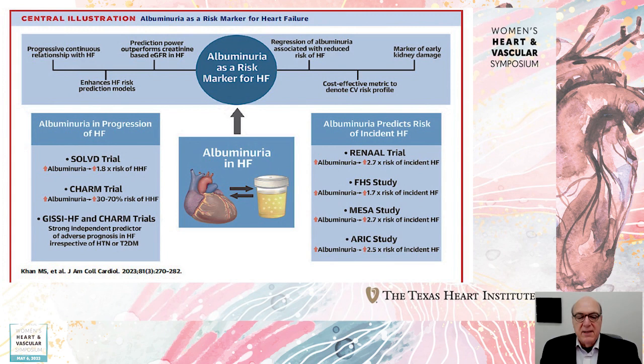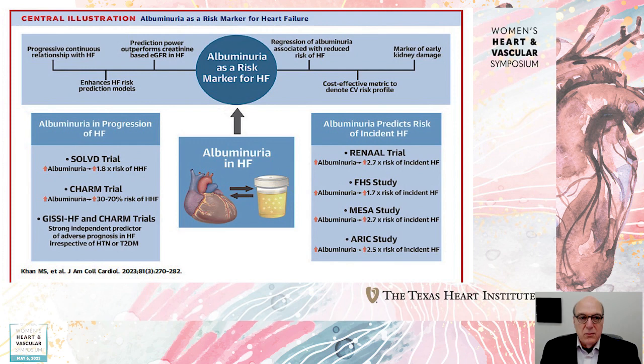This is recent data just published in JACC, basically telling you albuminuria is a risk factor for heart failure. This is a very nicely done, evidence-based study — all trial-related. So you're measuring the urine for the heart, not just the kidney. Please get a spot albumin-creatinine ratio. It's very simple to do, so make sure that you do it.